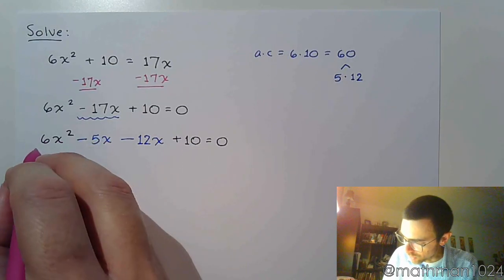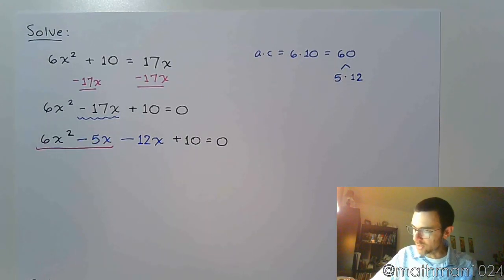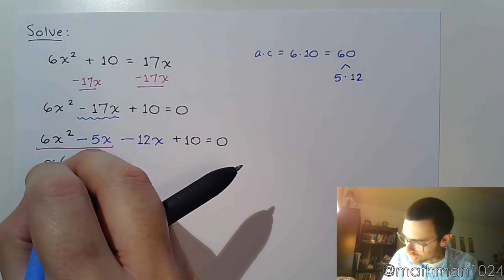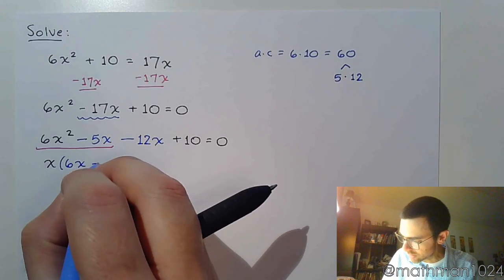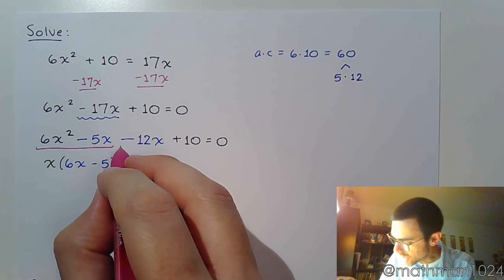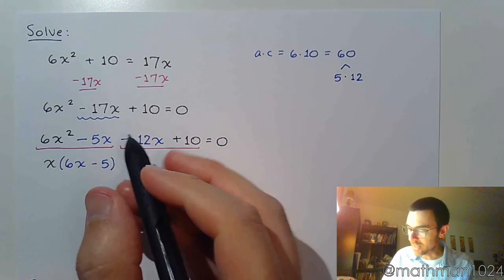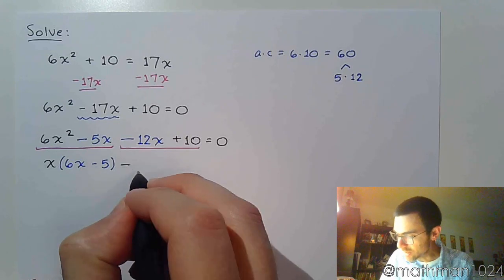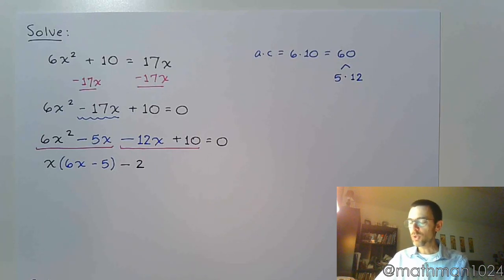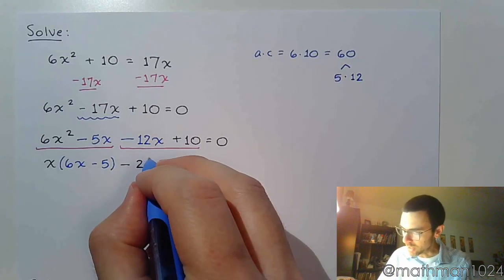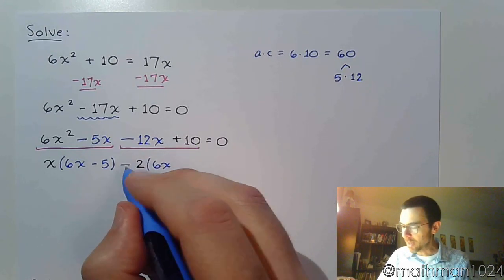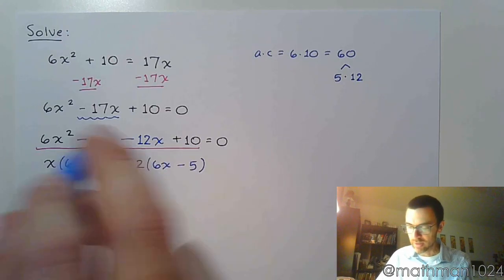In this first group, the common factor is x. If I factor that out, I'm left with 6x - 5. In the second group, please make sure you pay attention to the fact that it begins with a negative. The common factor for 12 and 10 is 2, so we factor out this negative 2, which is going to make this negative 12x become a positive 6x. Positive 10 divided by negative 2 is negative 5.